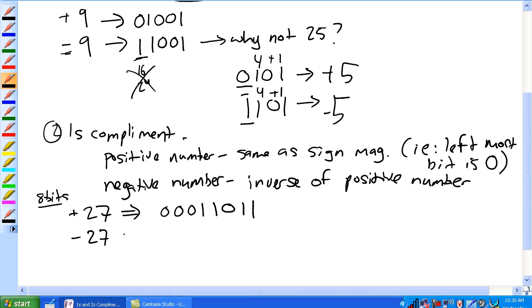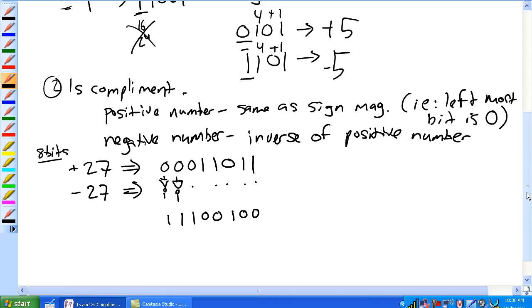So we want a negative 27 in 8-bit 1's complement notation. So inverse the positive number, where 1's are 0's and 0's are 1's. Just imagine putting all of these guys through a bunch of inverters. So 1, 1, 1, 0, 0, 1, 0, 0.